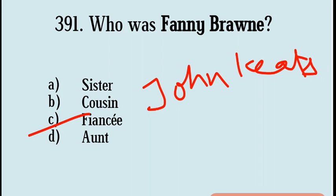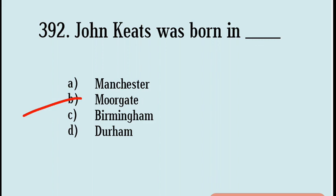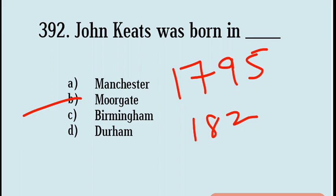Next question: John Keats was born in which city? Options are Manchester, Moorgate, Birmingham, Durham. Correct answer: Option B, Moorgate. John Keats was born in 1795 and died in 1821 in Rome.